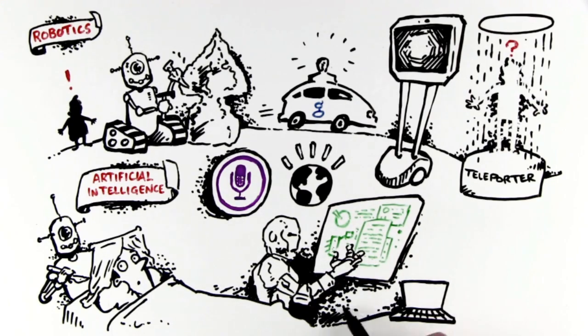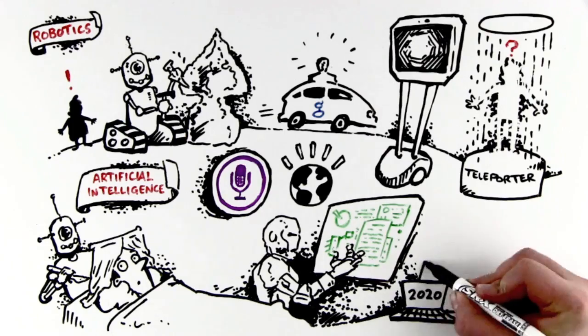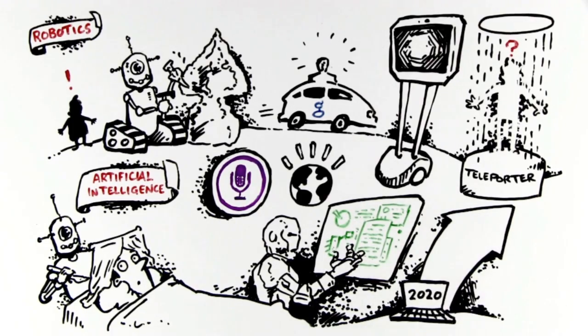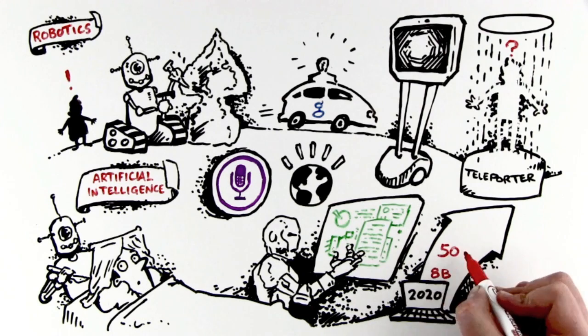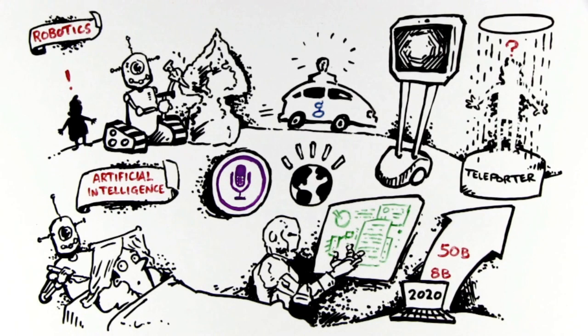But we're not talking about your father's Internet anymore. By 2020, the number of networked devices on the planet will have grown from our current 8 billion to over 50 billion, and moving quickly toward 1 trillion.